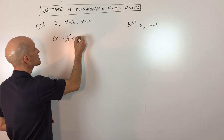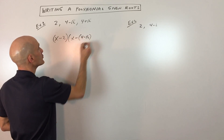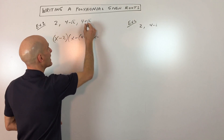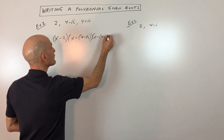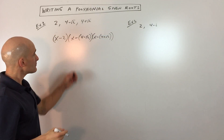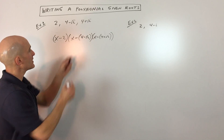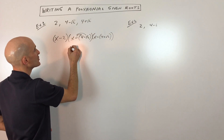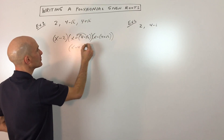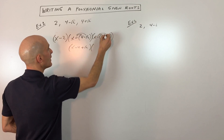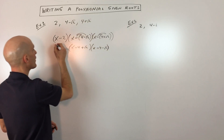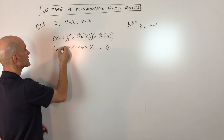And the same thing here, x minus the root is going to be a factor, and then x minus this root is going to be a factor. Now instead of writing it like this, let's go ahead and distribute this negative. So this is going to be x minus 4 plus square root of 2, and this is going to be x minus 4 minus square root of 2. I'm just going to bring down the x minus 2.